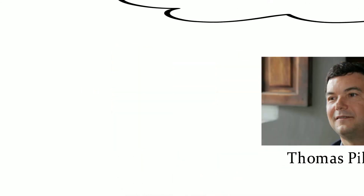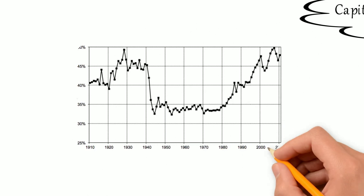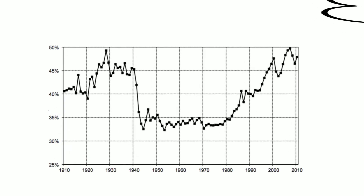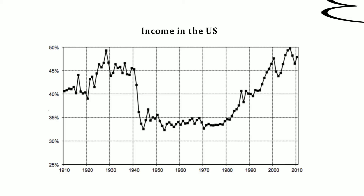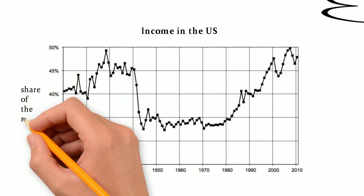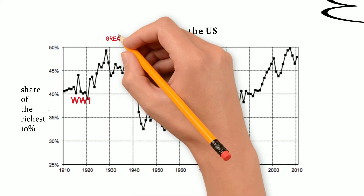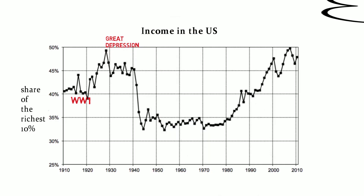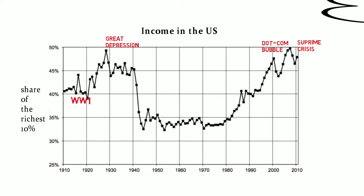Don't fool yourself by nice friendly faces or graphs like those, which may seem dull at first glance. This figure is super cool as it reveals income inequality in the US over the past 100 years. More accurately, it shows the income share of the richest 10%. Look at the development — you can see the effects of the First World War, the Great Depression, the dot-com bubble, and the subprime crisis in 2008.